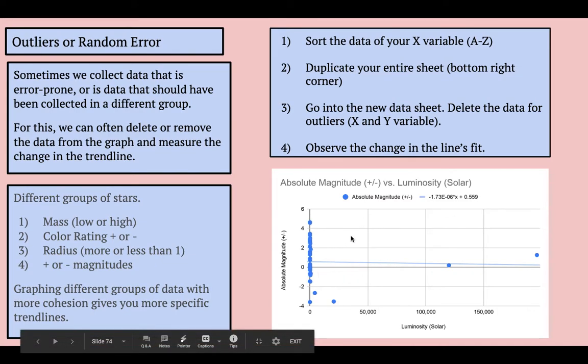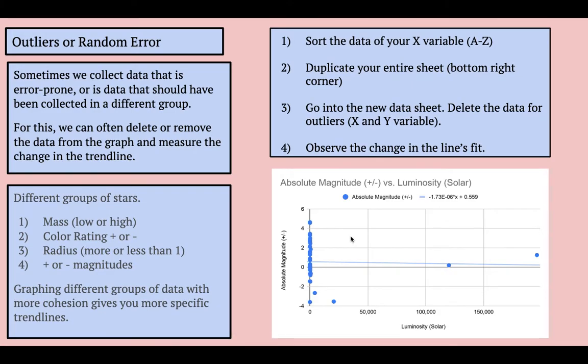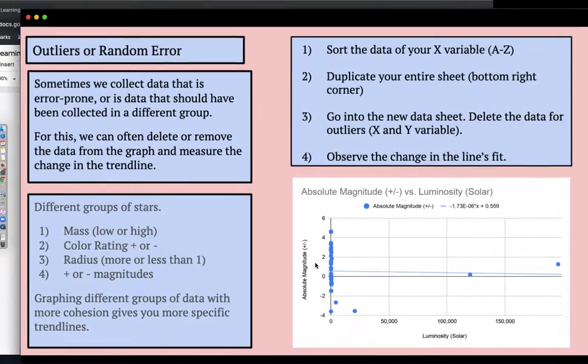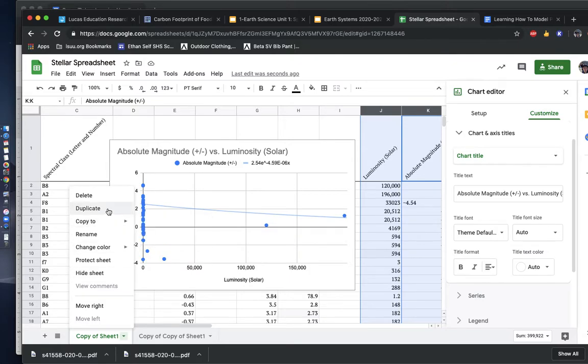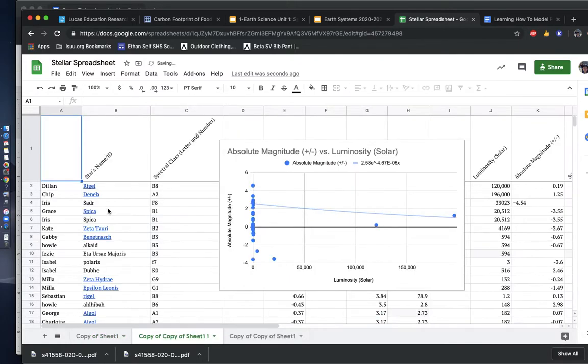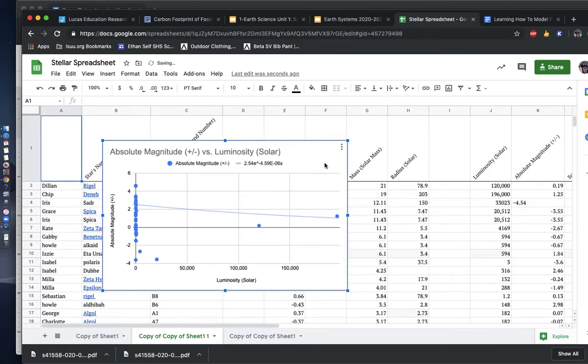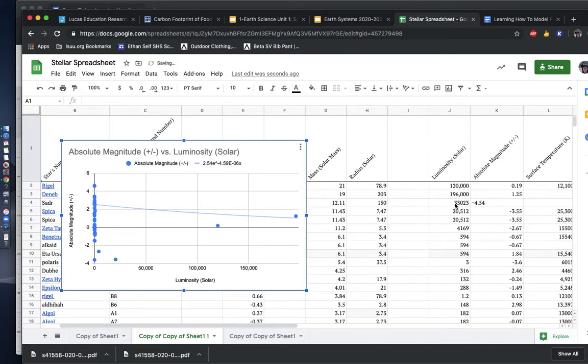So how do we go about making our trend lines better? And how do we go about grouping or removing outliers? First thing you're going to do is go down to copy of sheet, and you're going to press duplicate, which is basically going to make a copy of your spreadsheet. So here's my spreadsheet. Here's my new one. I'm going to sort my data, which I've already done by luminosity, but I'm just going to refresh you on how to do that. So I'm going to do Ctrl A.